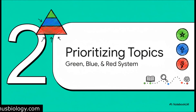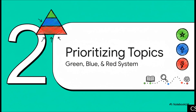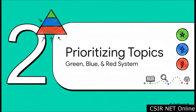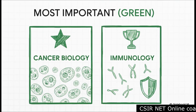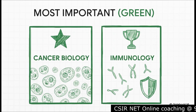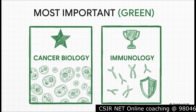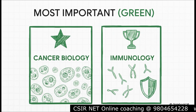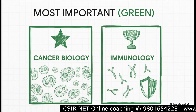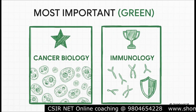Now that we have this game-changing 70% rule, what do we do with it? We can use it to create a super simple but incredibly effective priority system. We're going to break the whole unit down into three tiers: green, blue, and red — to give you a crystal-clear guide for your study plan. First up are green topics — think of these as your non-negotiables, your absolute top priority. Cancer biology and immunology are the heavy hitters; they are the source of that 70%. So if you're short on time and can only master two areas, these are it. No question about it.